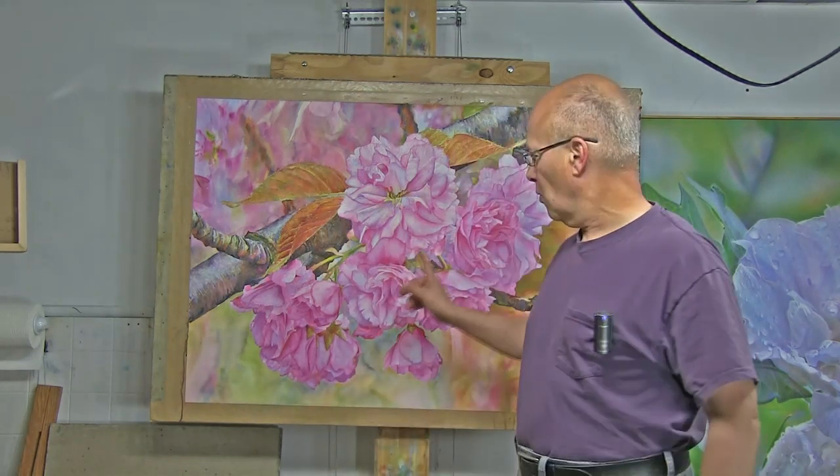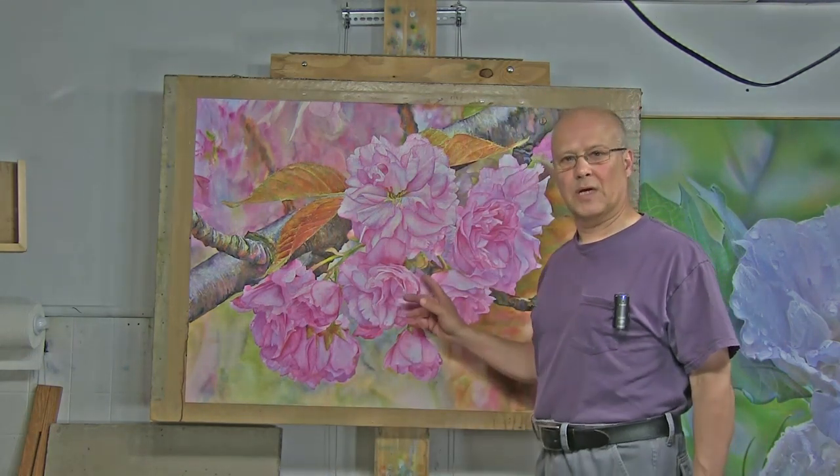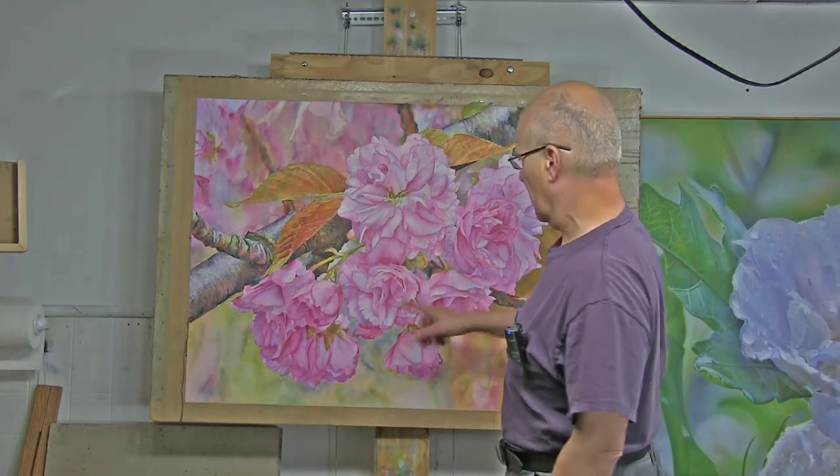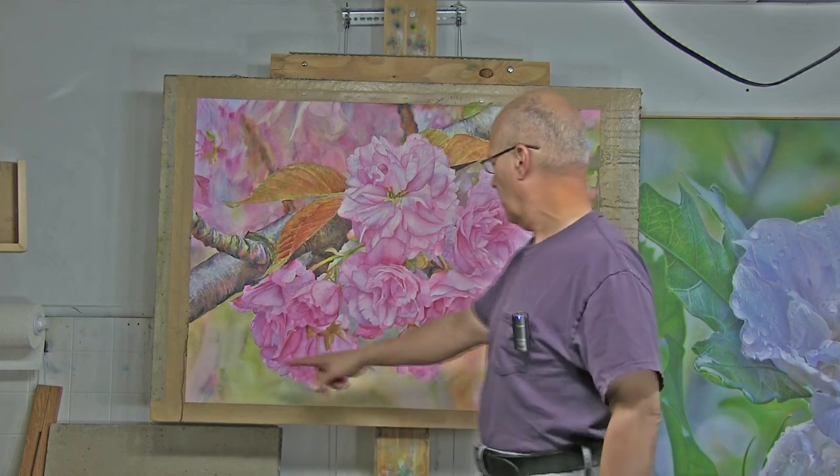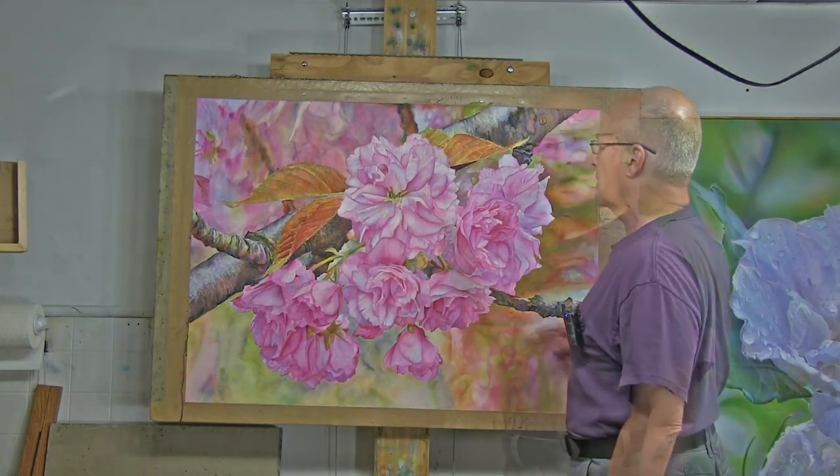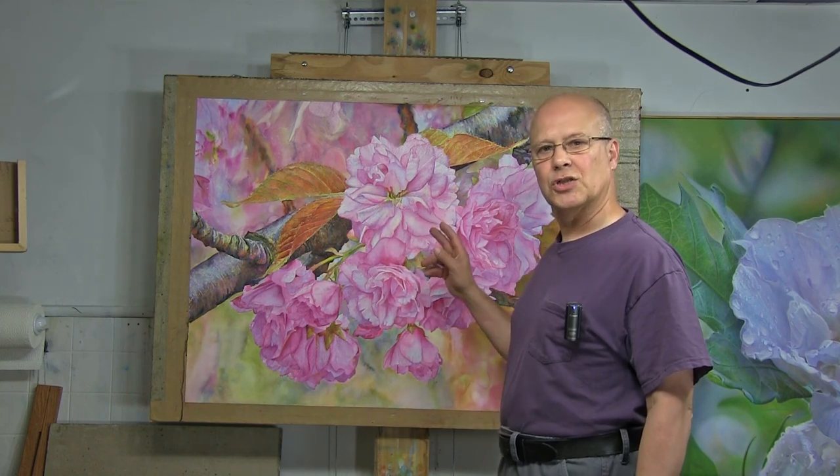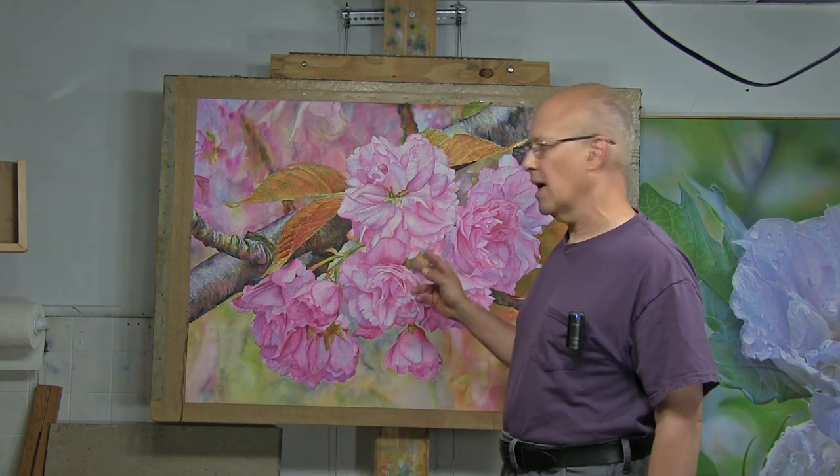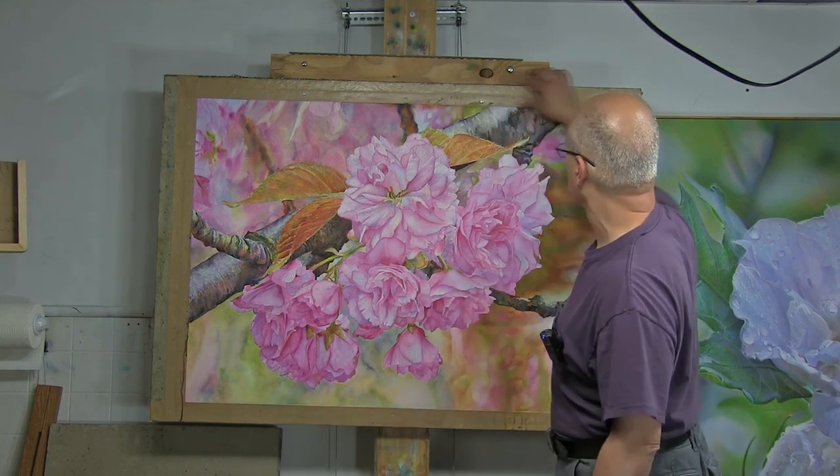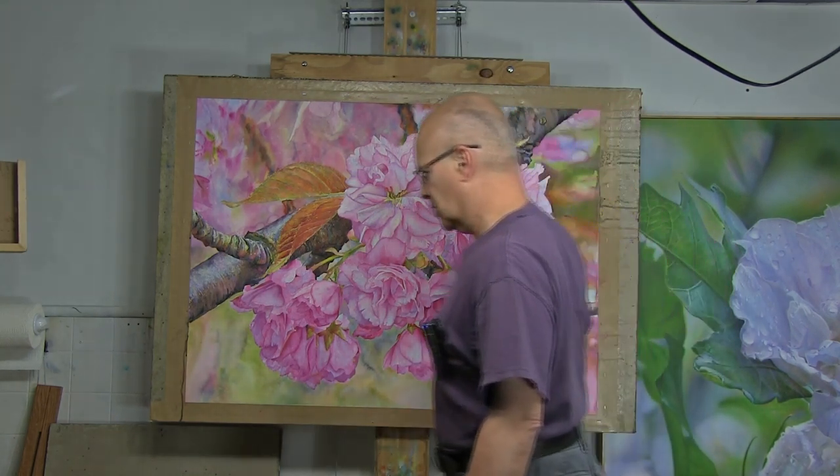Before we actually begin to stretch the paper, I wanted to point a few things out. What you see behind me is a watercolor painting that I just finished. It's large, about 30 inches high by 40 or so inches long. It's painted on Archer's cold press watercolor paper, 140 pound. That's my favorite paper to use. And you see it mounted on a piece of homosote.